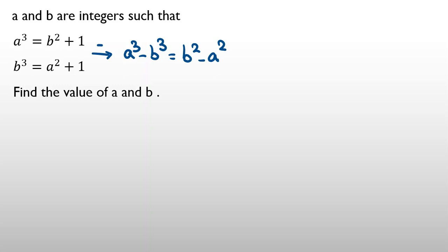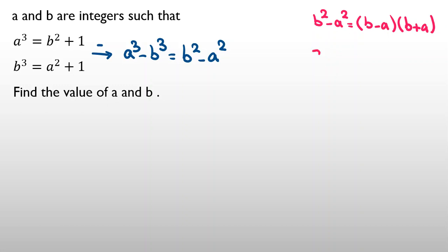For two terms, B squared minus A squared equals B minus A times B plus A. And for A cubed minus B cubed, you should memorize that for any A and B — in real or even complex numbers — A cubed minus B cubed equals A minus B times A squared plus AB plus B squared.